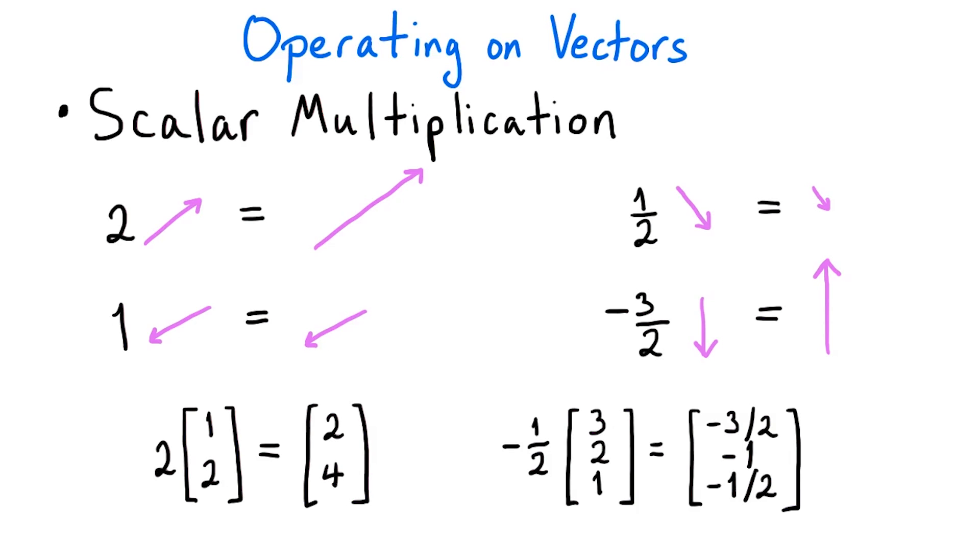Numerically, scalar multiplication is computed by multiplying each coordinate of the vector by the scalar. So 2 times the vector [1, 2] equals [2, 4]. And negative 1/2 times the vector [3, 2, 1] equals the vector [-3/2, -1, -1/2].